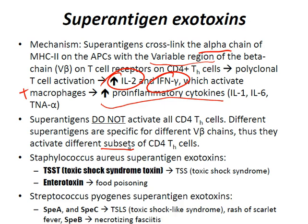The two to be really aware of: Staphylococcus aureus superantigen exotoxin, which causes toxic shock syndrome toxin, or TSST — this causes toxic shock syndrome. Also, in food poisoning, you can get an enterotoxin.